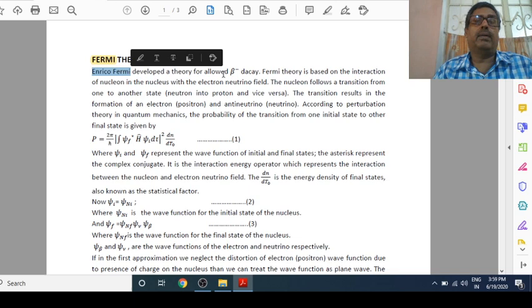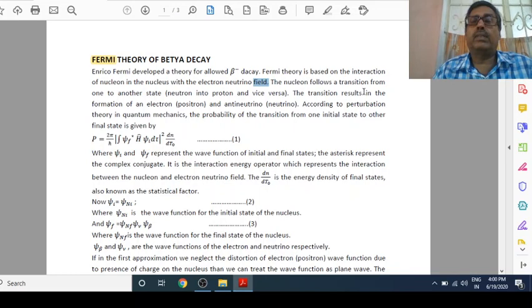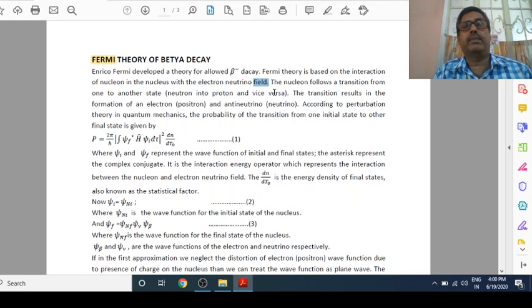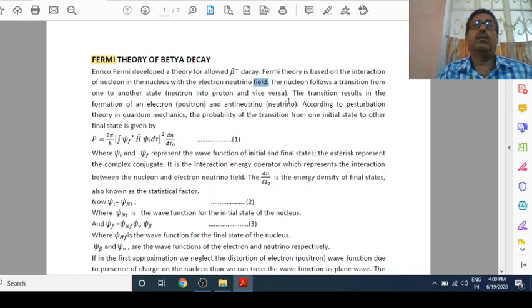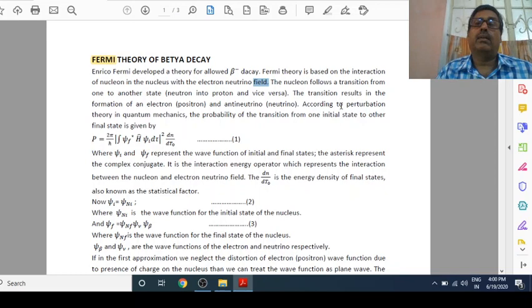First of all, we will see who developed this theory and what is the purpose. Enrico Fermi developed a theory for allowed beta decay. Fermi theory is based on the interaction of nucleons in the nucleus with the electron-neutrino field. The nucleon follows a transition from one state to another, neutron into proton and vice versa. The transition results in the formation of an electron and anti-neutrino. We will use quantum theory. According to perturbation theory in quantum mechanics,